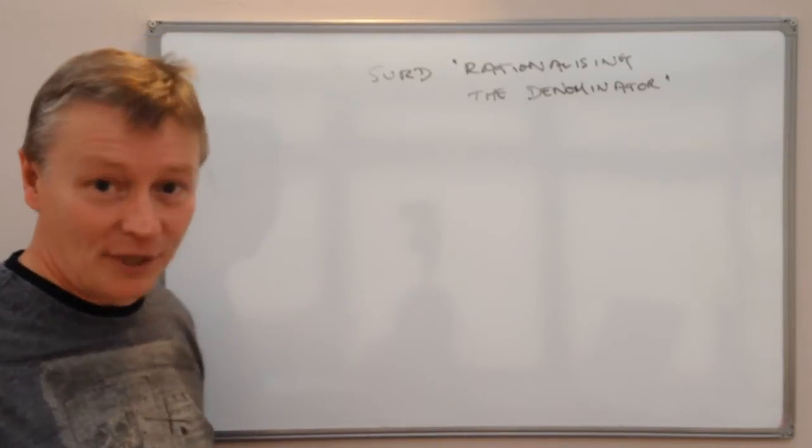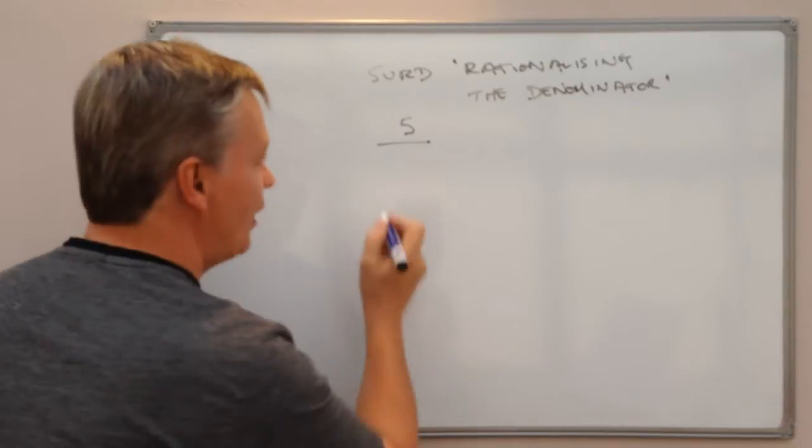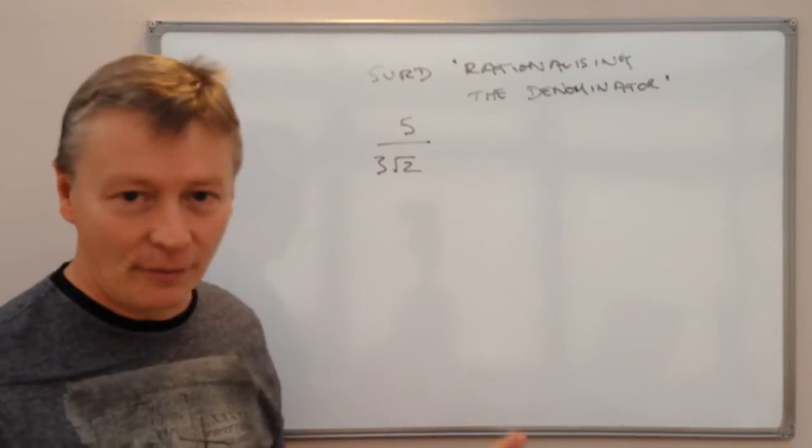Okay, so a typical question will be something like this where I've got 5 divided by 3 root 2. And what it'll ask you to do is to rationalise the denominator.